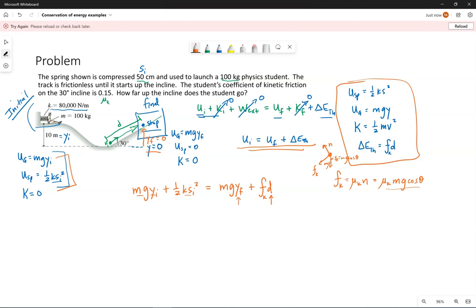Which means our only unknowns in here are the distance up the incline, which we want, and y final. But that distance up the incline is related to y final because they're part of the same triangle.